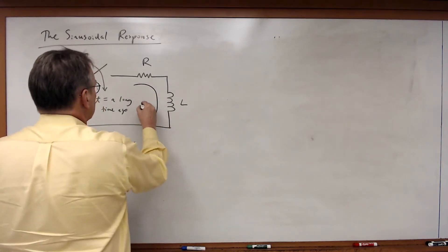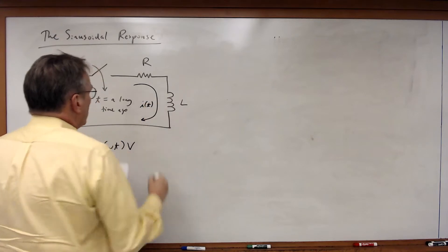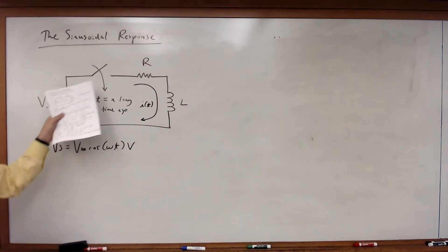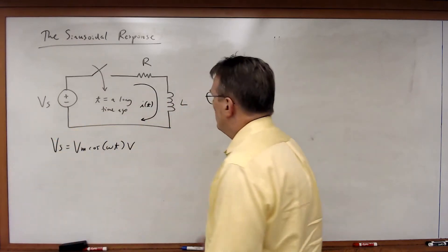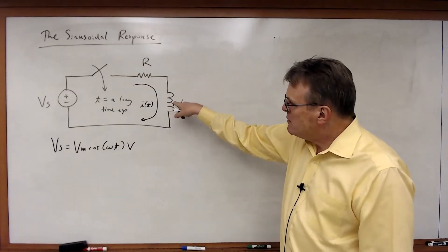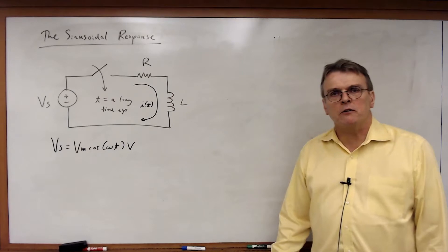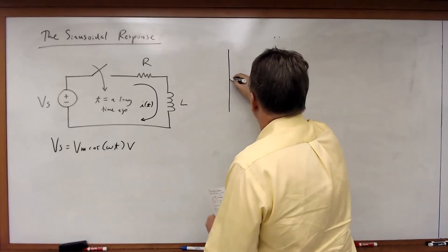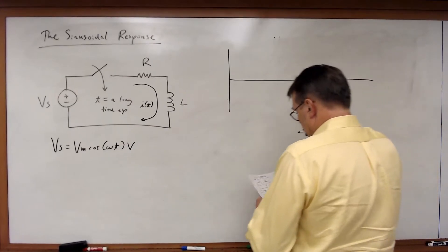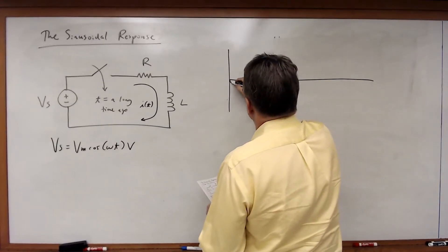So once I closed that switch, some current I sub T began to flow through the resistor and through the inductor. So what happened to the current in that inductor when I first closed that switch? Well, a long time ago, if you had looked at that and first turned it on, you would have seen something like this.